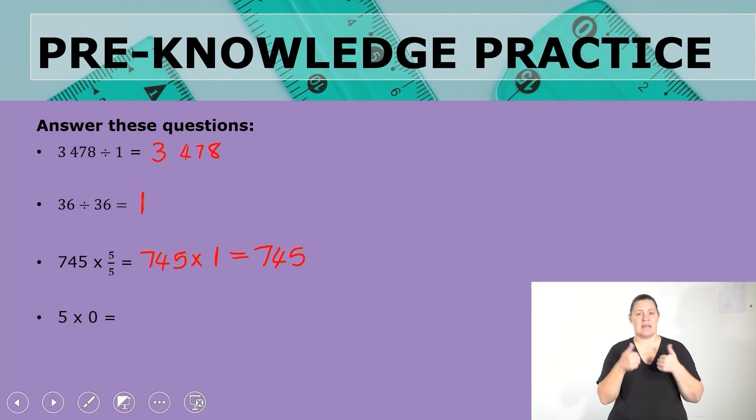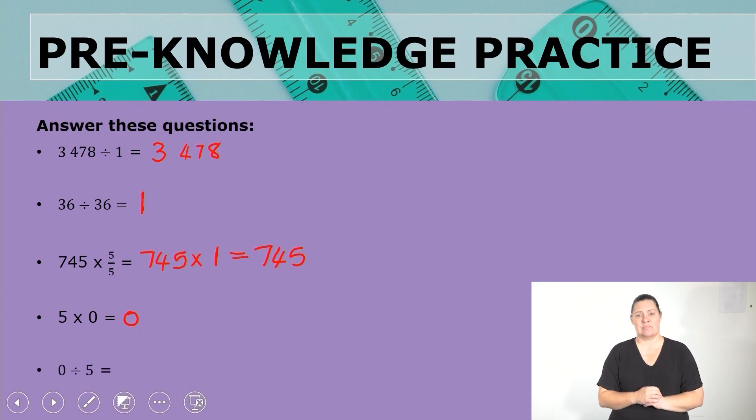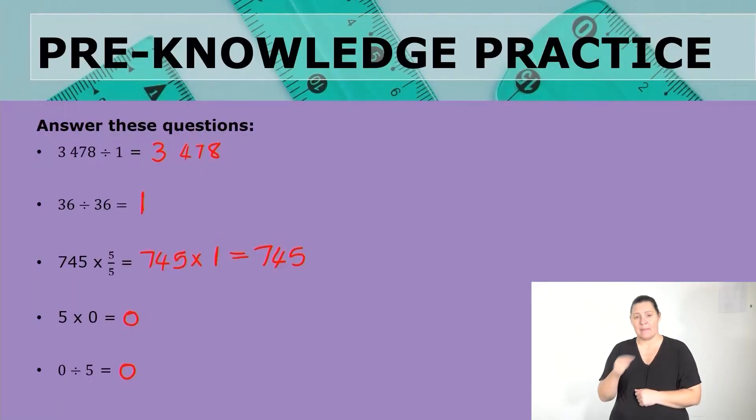Five multiplied by zero: remember the properties of zero — any number multiplied by zero equals zero. And zero divided by five: zero divided by any number gives zero. Let's now look at the new vocabulary we'll be using in this lesson.